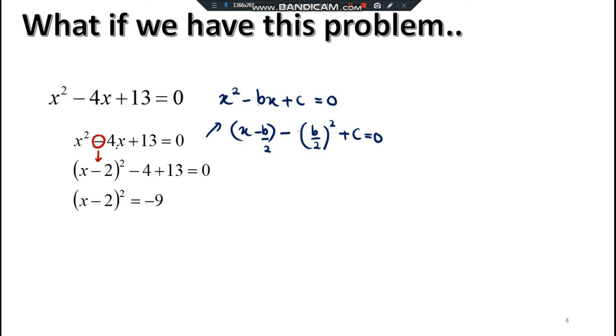So now square it up. It always has consistent minus. Why 4? Because it's 2 squared straight away, and then plus 13, just bring it over there.